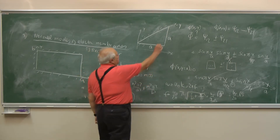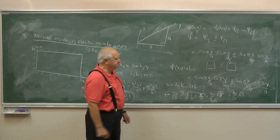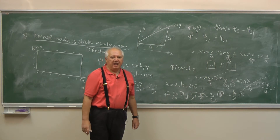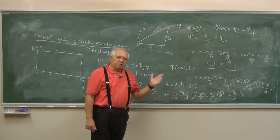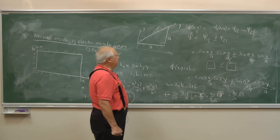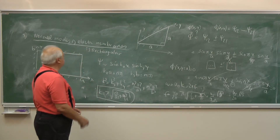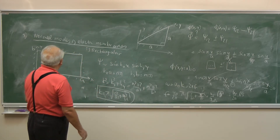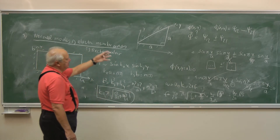The right triangle has a 90-degree angle. So much for the rectangular membrane and its applications.